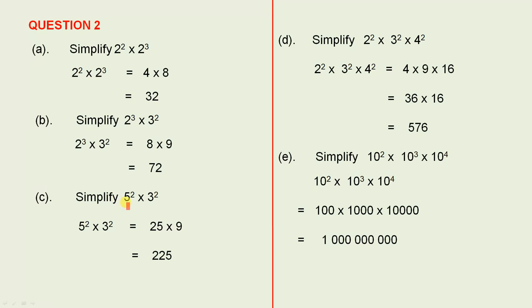Simplify 5 squared times 3 squared. Now here we have 5 squared times 3 squared. 5 squared is 25, because 5 times 5 is 25. 3 squared is 9, 25 times 9 is 225.